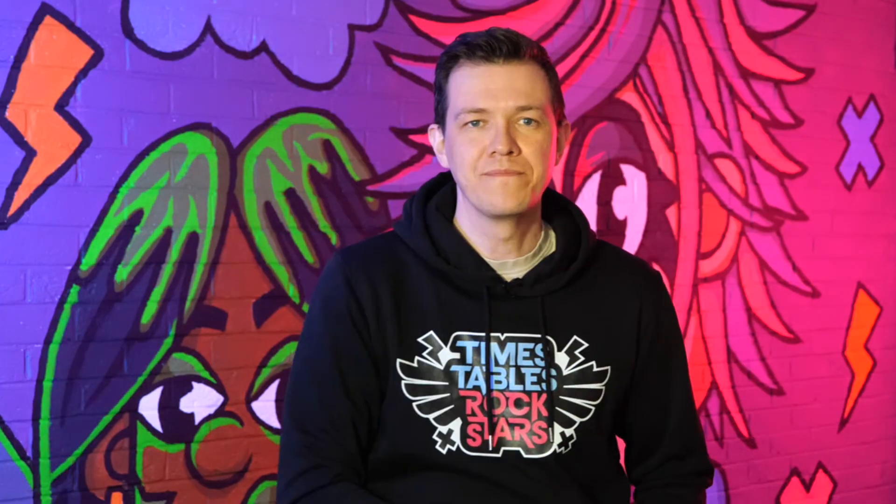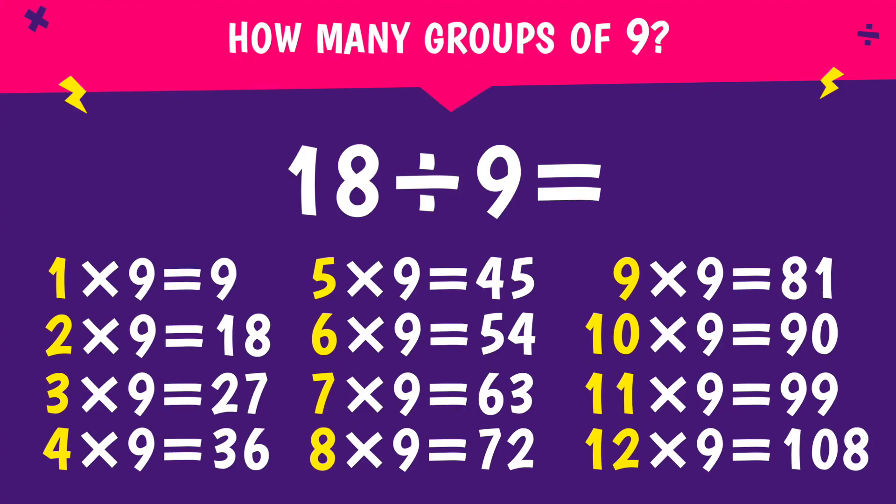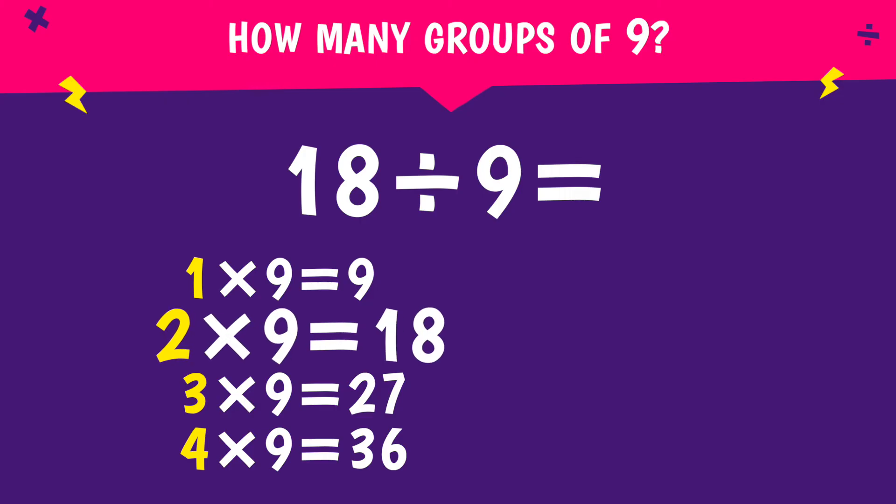Got your answer? Great. If we look at the nine times table, we can see that two groups of nine make 18. How many groups of nine in 18? It's two. 18 divided by nine is two.